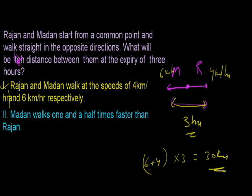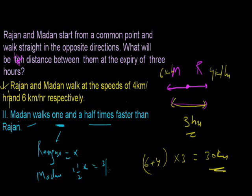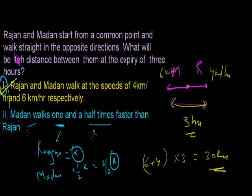Now let me check the second statement: Madan walks 1.5 times faster than Ranjan. If Ranjan's speed is X, then Madan's speed is 1.5X, which is 3/2 X. There will always be a variable X when you multiply with time, so this is not sufficient to answer the question alone. Since I'm getting the answer from statement one, and not from statement two alone, the answer is option A — statement one alone is sufficient while statement two is not.